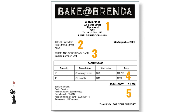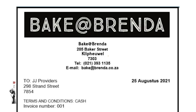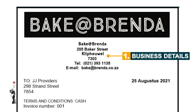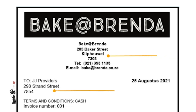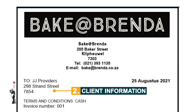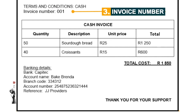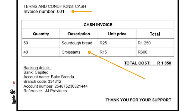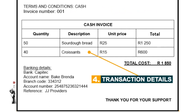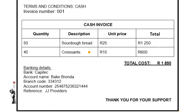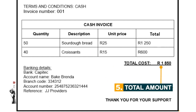The total amount payable by JJ Providers should also be on the cash invoice, and of course the banking details of Baker-Brenda.